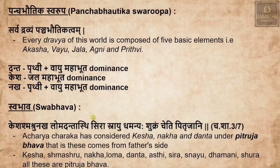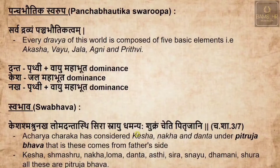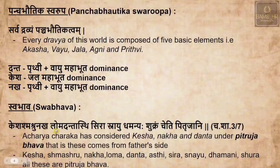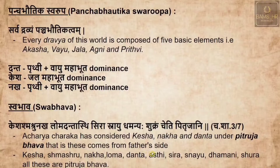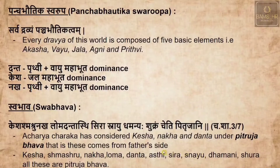When we see the Swabhava, the sloka states: Kesha, Shmashru, Nakha, Loma, Danta, Ashti, Sirasnayu, Dhamanyaha, Shukram — these are Pitrujani. Acharya Charaka has considered Kesha, Nakha, Loma and Danta under Pitrujabhava — that is, these are patterns from the father's side. Along with these, Shmashru, Ashti, Sirasnayu, Dhambani and Shukra are also Pitrujabhavas.